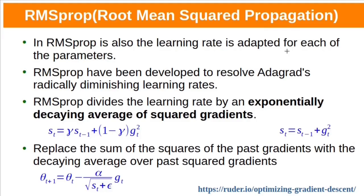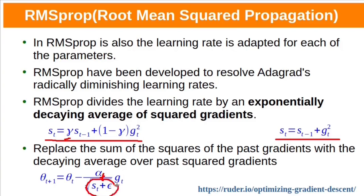In RMSprop, the learning rate is also adapted for each of the parameters. RMSprop resolves Adagrad's radically diminishing learning rate problem. RMSprop divides the learning rate by an exponentially decaying average of squared gradients. This hyper-parameter gamma restricts the gradients to recent time steps — the algorithm will forget early gradients and focus only on the most recent gradients. By replacing the sum of squares of past gradients with this decaying average of squared gradients, the learning rate will not decrease as rapidly as in Adagrad. Compared to Adagrad, the denominator here is smaller because it does not accumulate all gradients — only recent ones — so alpha will not decrease that much, meaning the learning rate will not be decreased nearly as fast. As a result, RMSprop converges faster.